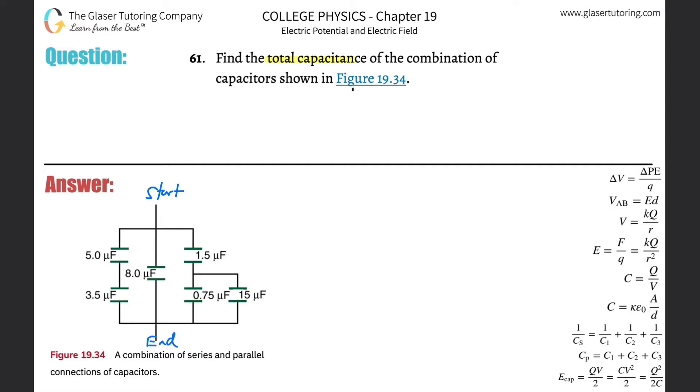In order to get to the 3 microfarad, I had to flow through the 5. So I'm going to combine these two first. Let's do that math. One over the capacitance in series equals one over the first capacitor plus one over the second capacitor, etc.